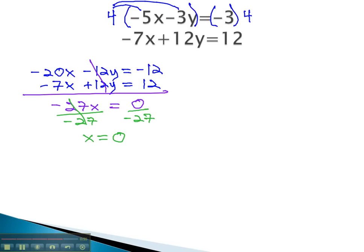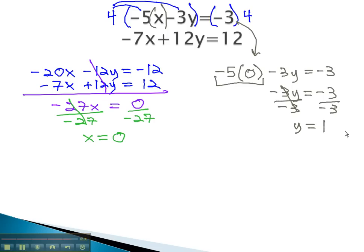We can find y by plugging this back into one of the original equations. Let's plug it into the first equation. Negative 5x, or negative 5 times 0, minus 3y equals negative 3. Negative 5 times 0 is simply 0, so we have negative 3y equals negative 3. Dividing both sides by negative 3, and y is equal to 1.